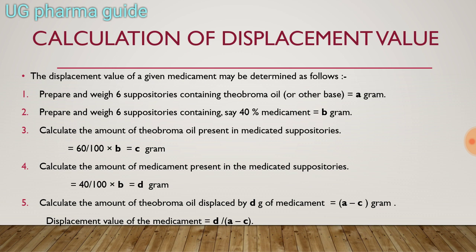The fifth and final step is to calculate the amount of theobroma oil displaced by D gram of medicament. The theobroma oil displaced = A minus C gram. Therefore, the displacement value of the medicament = D / (A − C). Use this formula for your calculations.